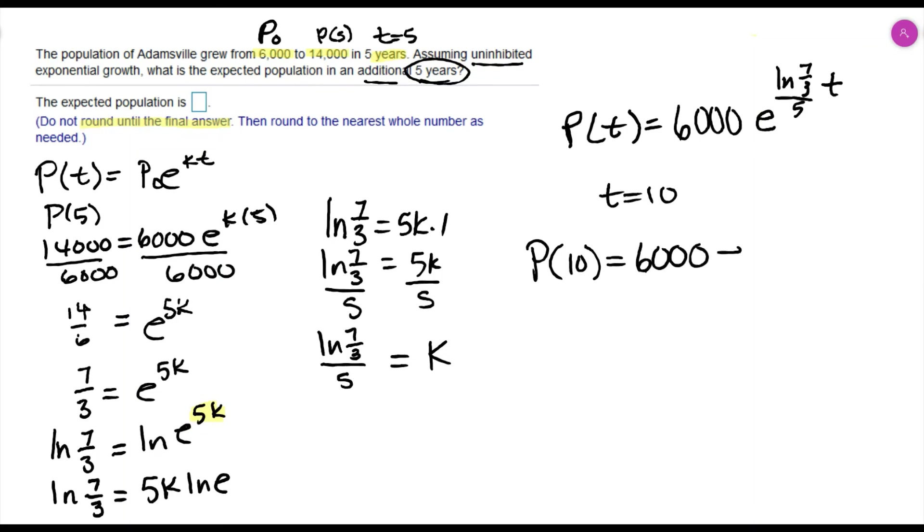That's 6,000 e to the natural log of seven-thirds over five times 10. So I'll type that in my calculator to see what I get. We want to round to the nearest whole number.